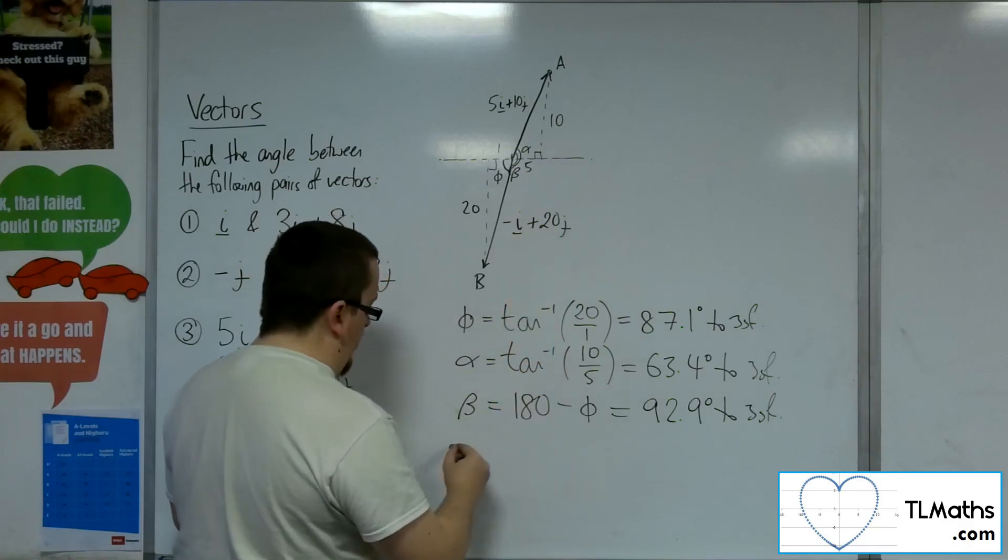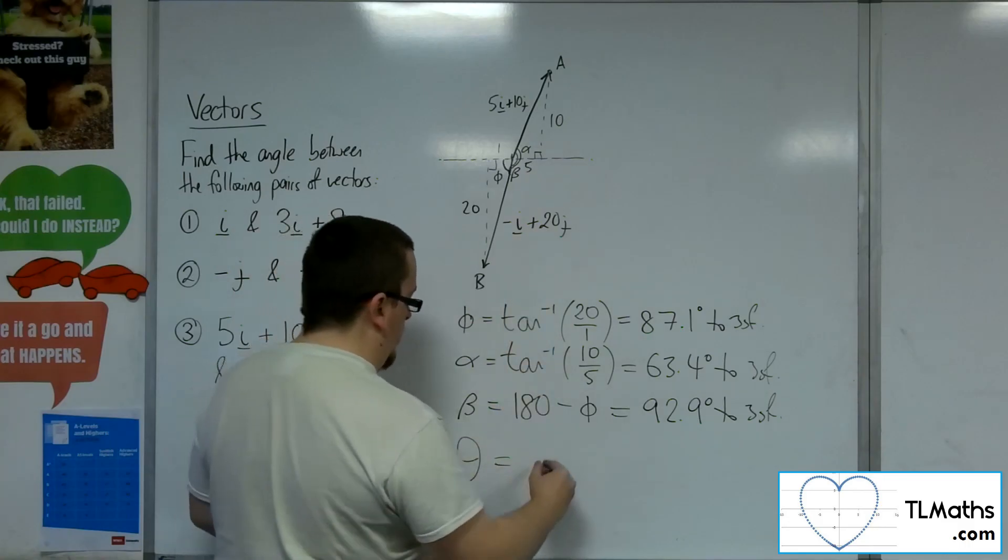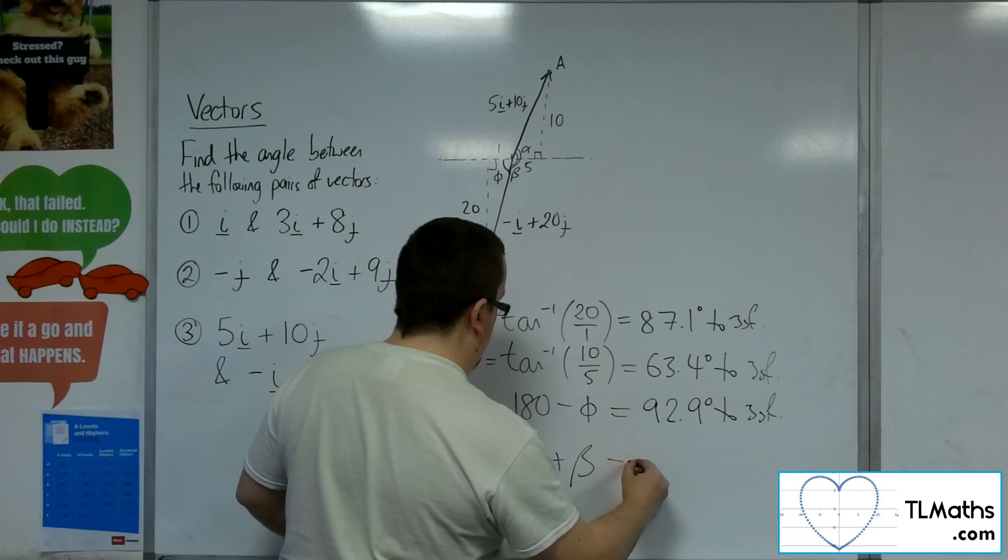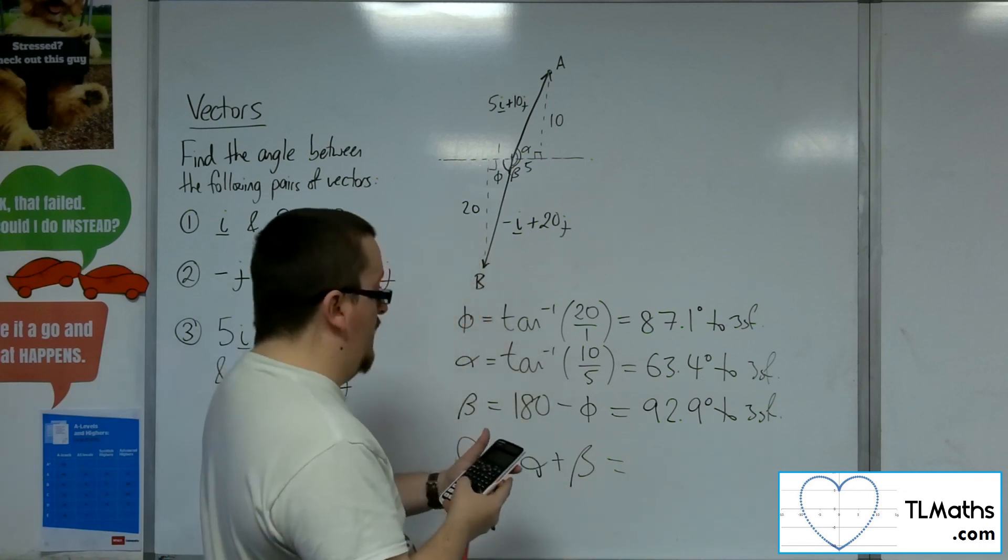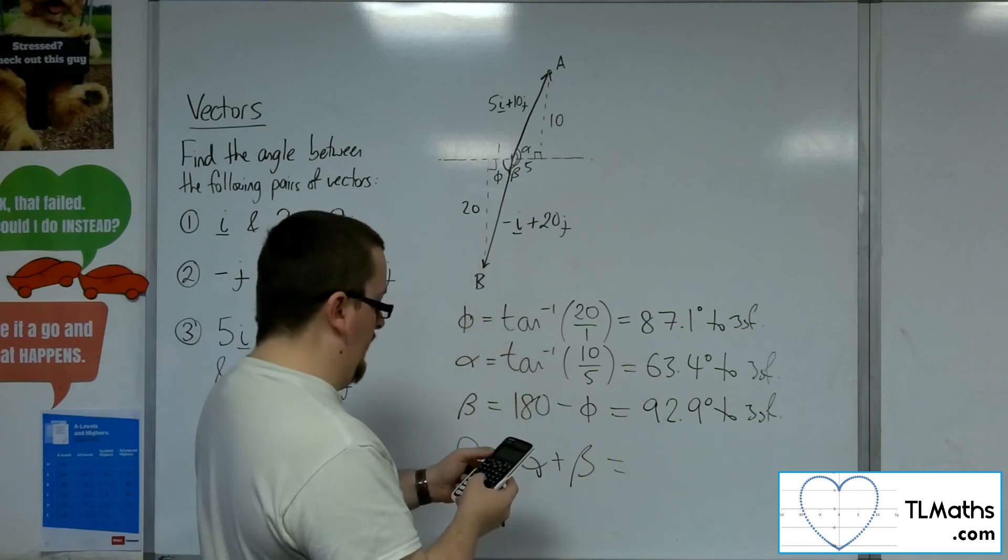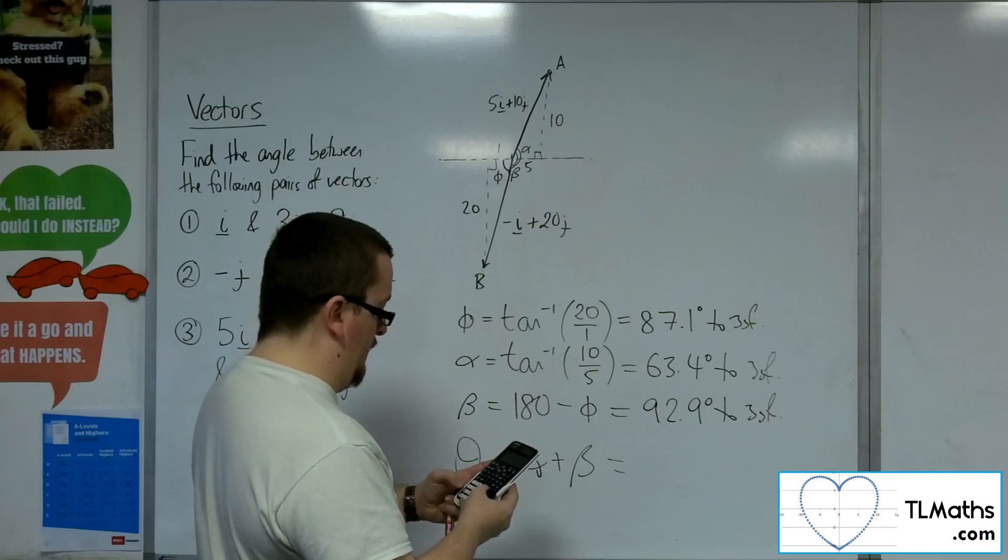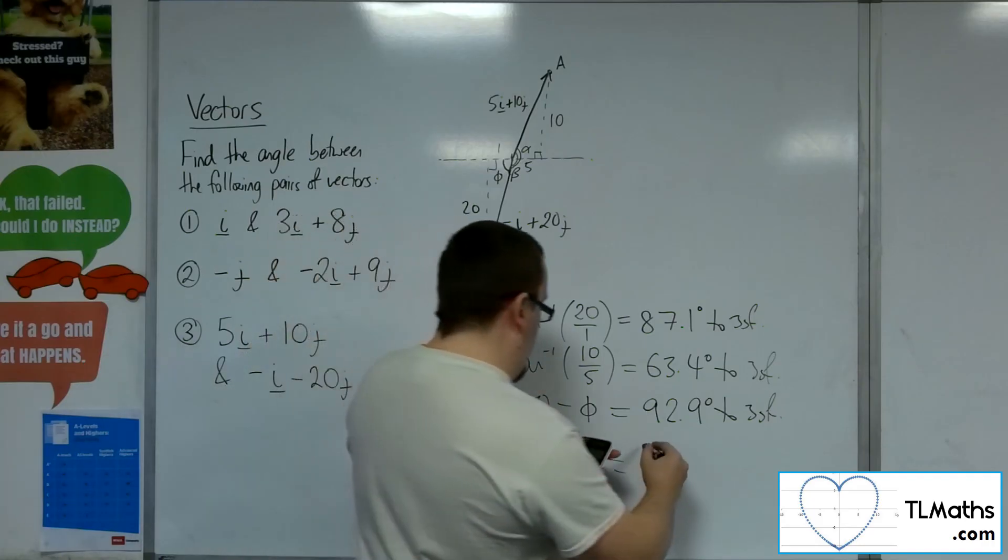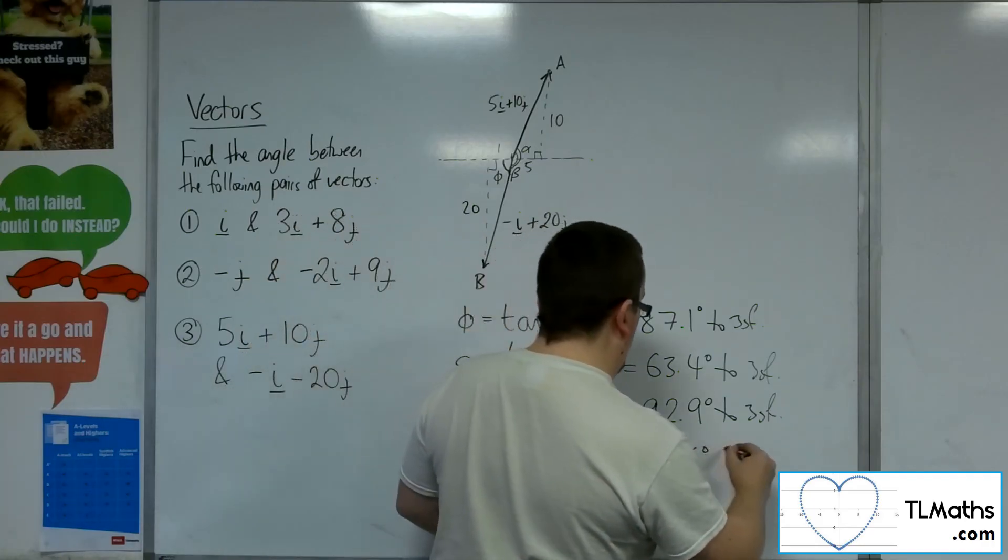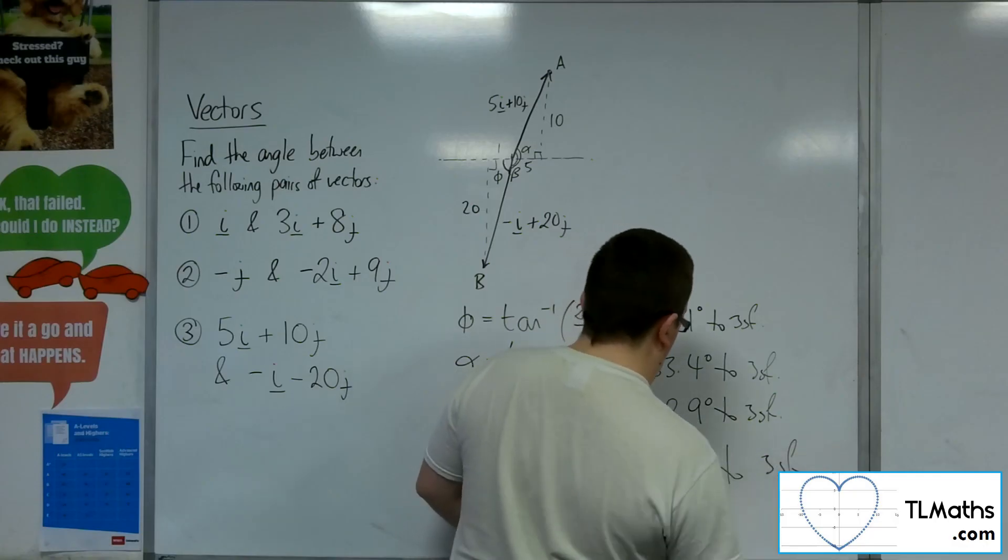Add that onto alpha. So the angle that I want, let's call it theta, is alpha plus beta. So 92.9 plus inverse tan of 10 over 5. And that gets me 156 degrees to 3 sig fig.